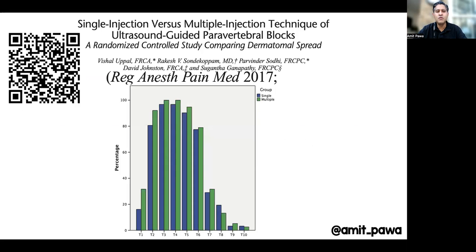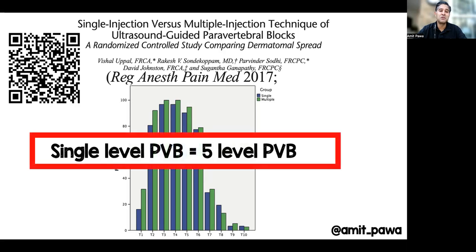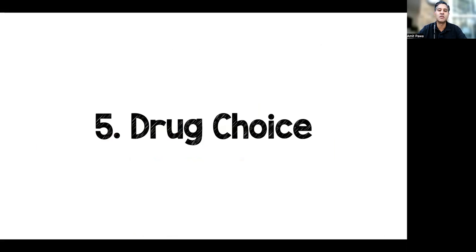What we do know — backed up in the literature — is that a single-level paravertebral block delivers dermatomal coverage equivalent to a five-level paravertebral block. So one might question why, if it's just for analgesia, you need to do multiple-level punctures.